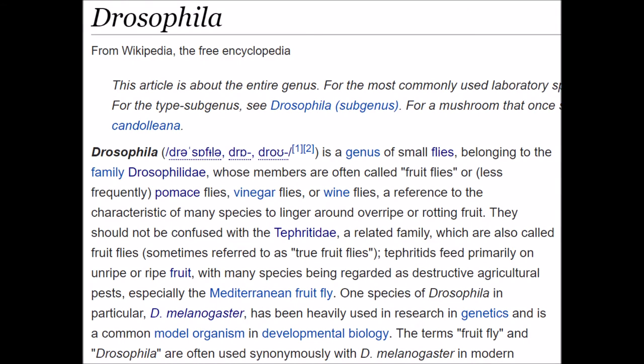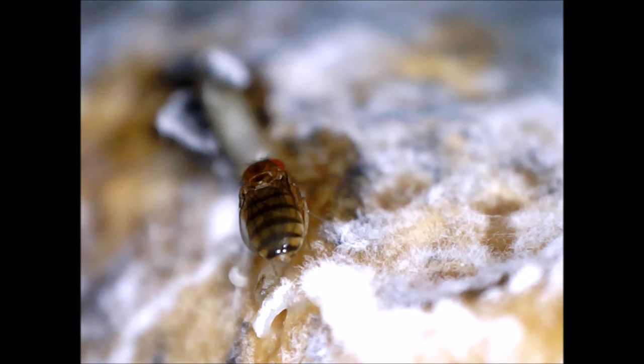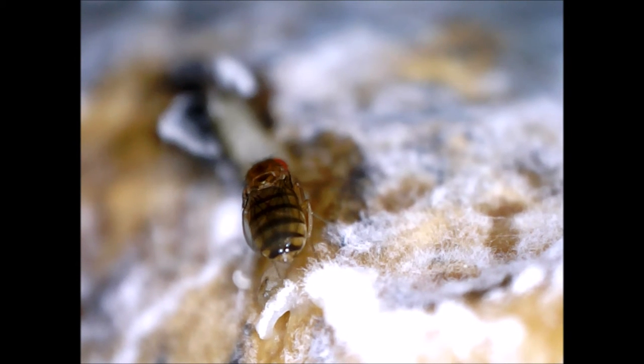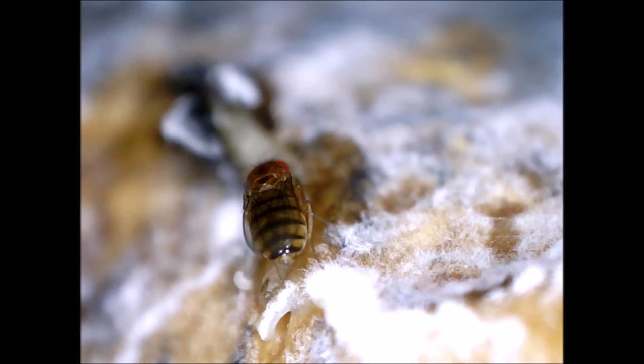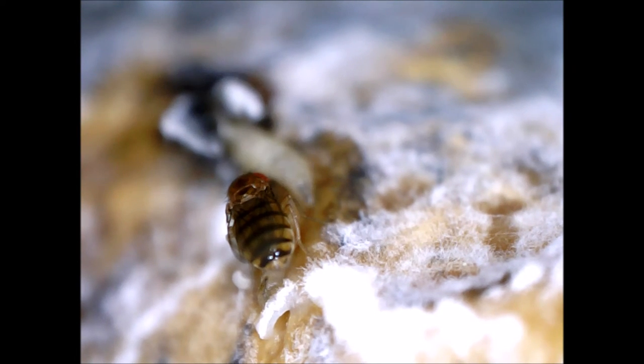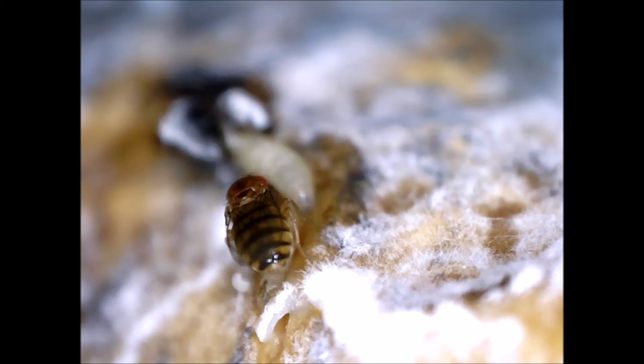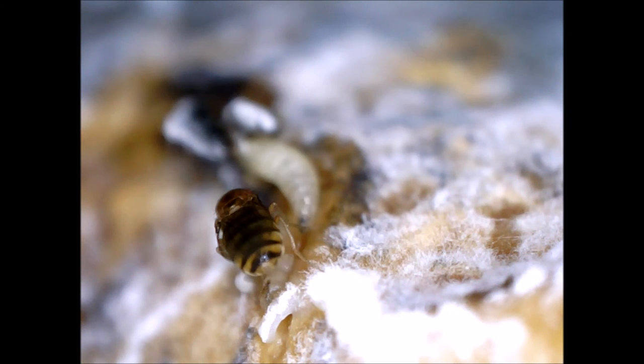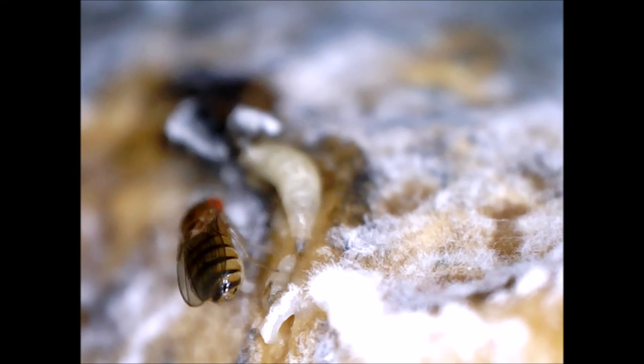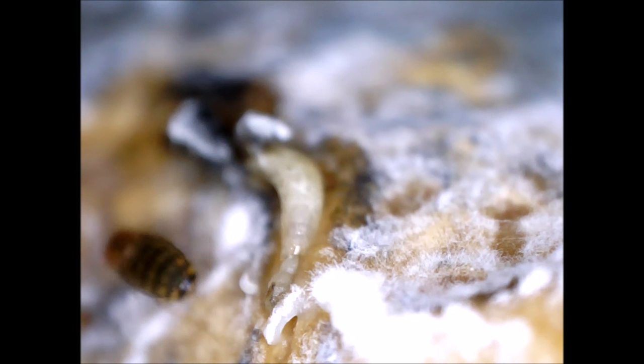This article on the Drosophila genus says: Drosophila species are found all around the world, with more species in the tropical regions. Most species breed in various kinds of decaying plant and fungal material, including fruit, bark, slime fluxes, flowers, and mushrooms.